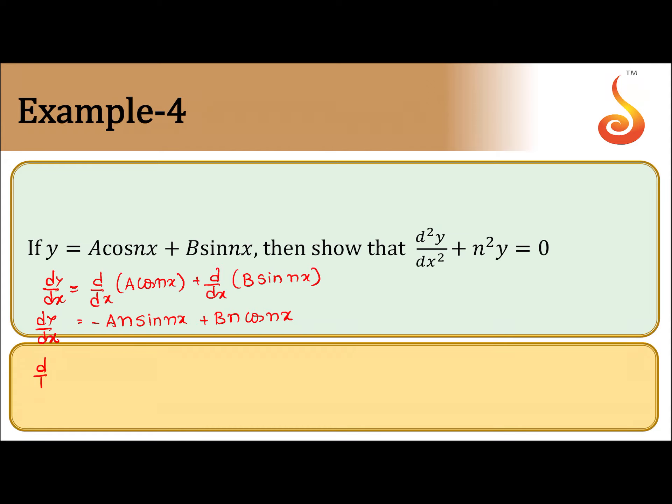Now again, d/dx of dy/dx will give you d/dx of minus An sin(nx) plus d/dx of Bn cos(nx). So what we get here: minus An² cos(nx).